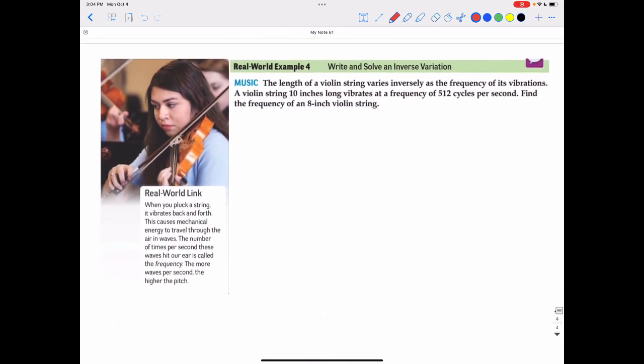Finally, you can see a real-life example where inverse variation is used involving music. When you pluck a string, it vibrates back and forth. This causes mechanical energy to travel through the air in waves. The number of times per second these waves hit our ear is called the frequency. The more waves per second, the higher the pitch. The length of a violin string varies inversely as the frequency of its vibrations. A violin string 10 inches long vibrates at a frequency of 512 cycles per second. Find the frequency of an 8-inch violin string.